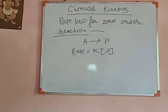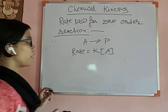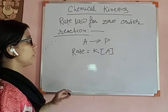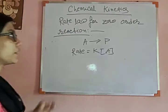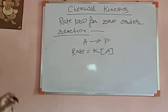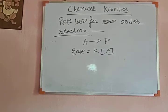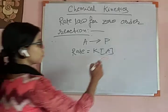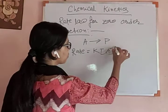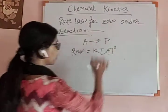You know that the order of any reaction — if we say this is a zero order reaction — the order will be zero and it goes to the power of the reactants. So rate equals K times concentration of A to the power of zero.